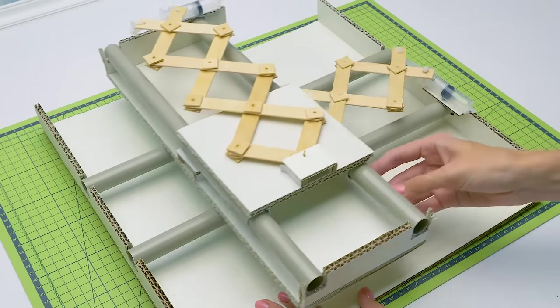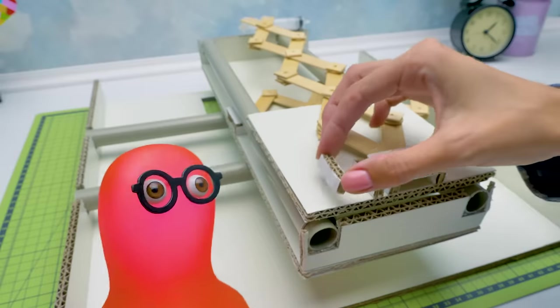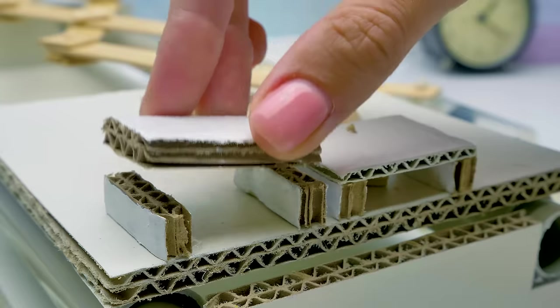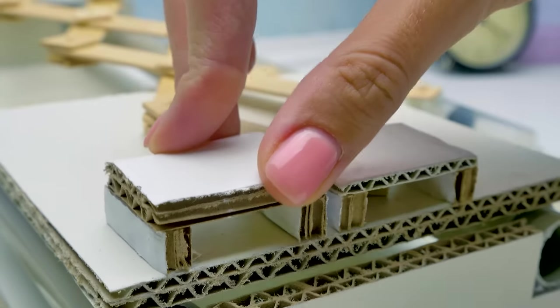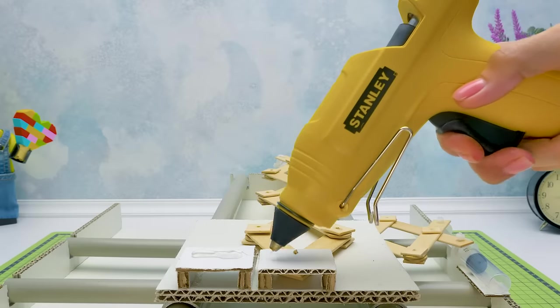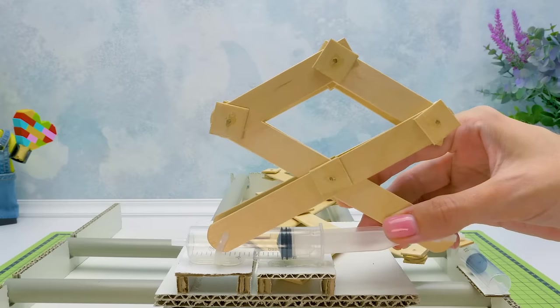We'll attach the spring to the mechanism. And now comes a small test drive. Like this. Oh, works great. Oh, now I get it. Later you'll glue the claw here. Right you are, Sammy. You're very observant. And now I'll glue a few pieces to prepare a place for it.